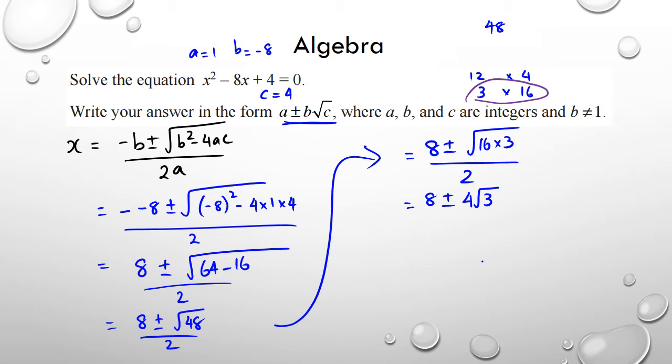But I still have to keep carrying on because the format I'm looking for is a plus b root c. I can simplify this a little bit more as 8 over 2 plus or minus 4 over 2 root 3, and this can be written as 4 plus or minus 2 root 3.